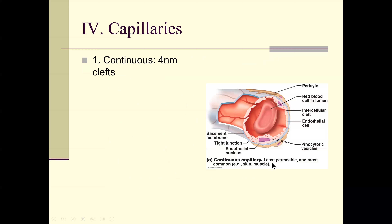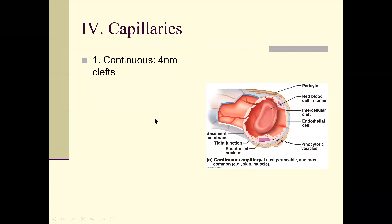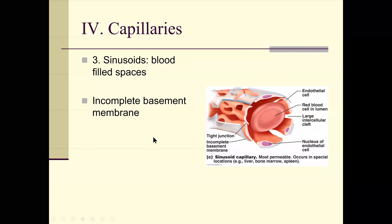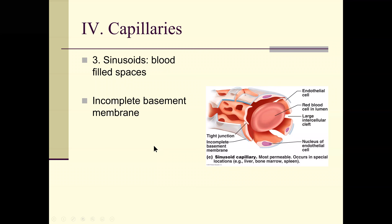Types of capillaries: continuous capillaries have nanometer clefts; fenestrated capillaries have 20–100 nanometer holes. Nanometers are 10 to the minus 9 — you'll be working with nanometer technology and drug delivery systems in your medical career. Sinusoids are blood-filled spaces with incomplete basement membranes, found in the brain and at the placenta.